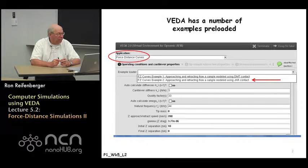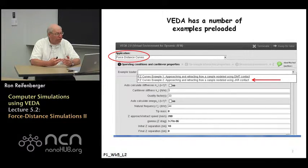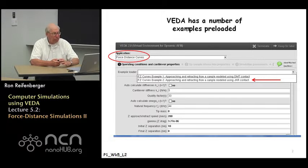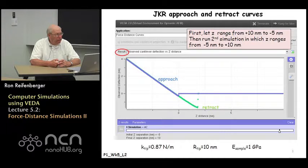Select the preloaded example: approaching and retracting from a sample using the JKR contact model. When you select that particular preloaded example, a variety of parameters are already loaded into the VEDA software so you do not have to adjust anything. You can directly go to the simulate tab, press simulate, and you'll see JKR approach and retract curves for the default parameters listed.